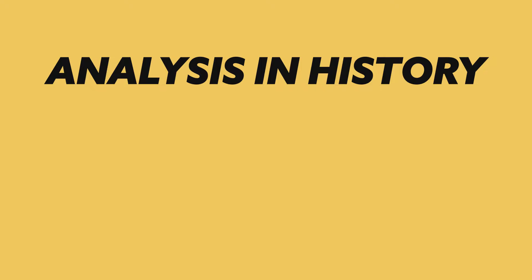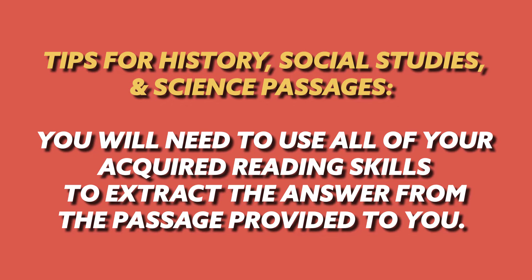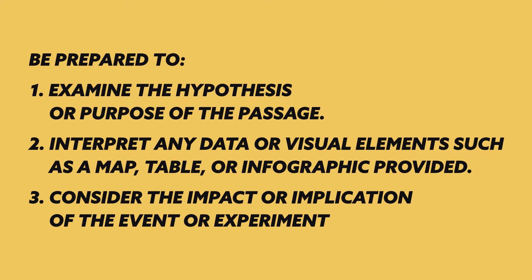Words can have multiple meanings, so you'll have to use the context to understand what they mean — for example, "bear" could be the animal or mean having nothing, and "current" could be a river current or an electric current. The third part is analysis in history, social studies, and science, requiring reading skills needed to succeed in those subjects. For instance, you might read about an experiment and be asked to examine the hypothesis, interpret the data, and consider the implications and conclusions drawn from that research.